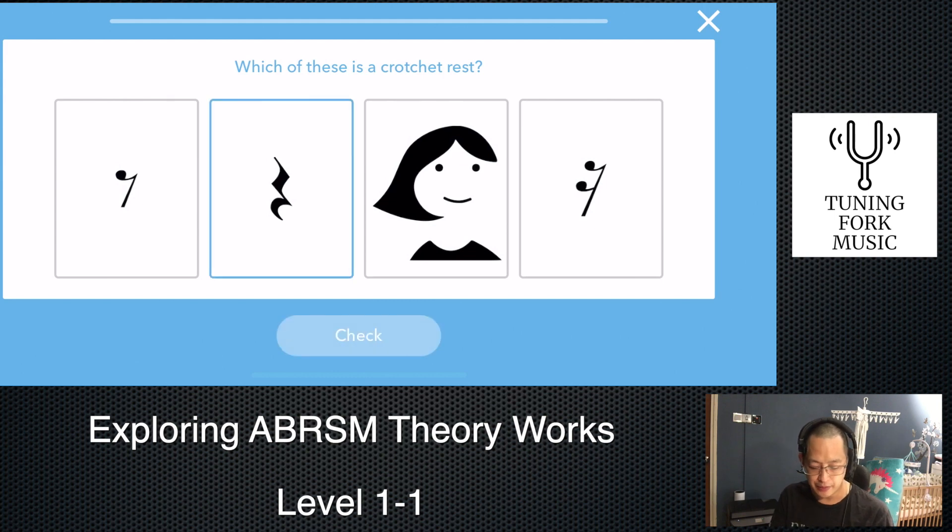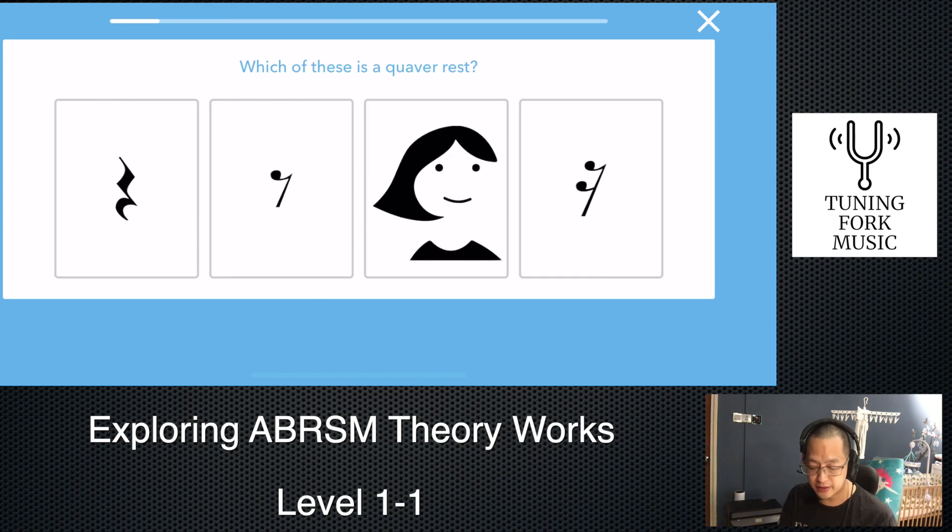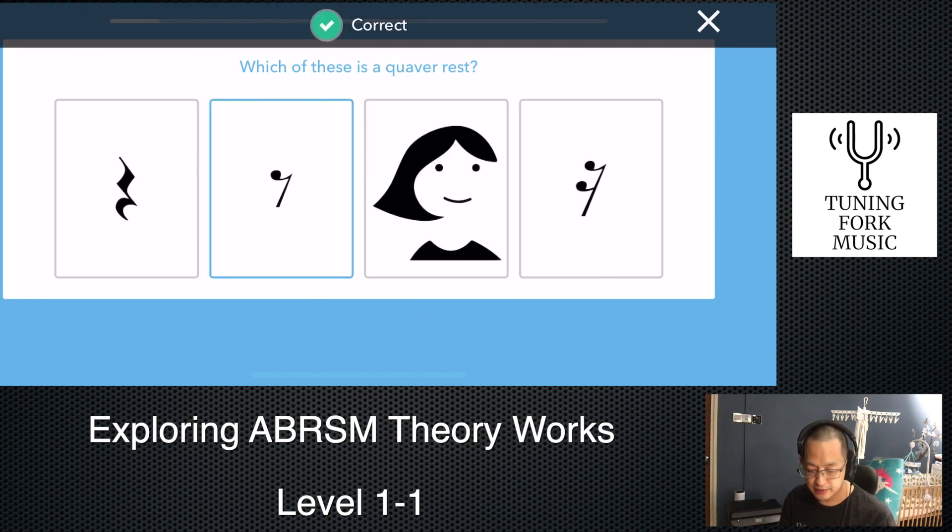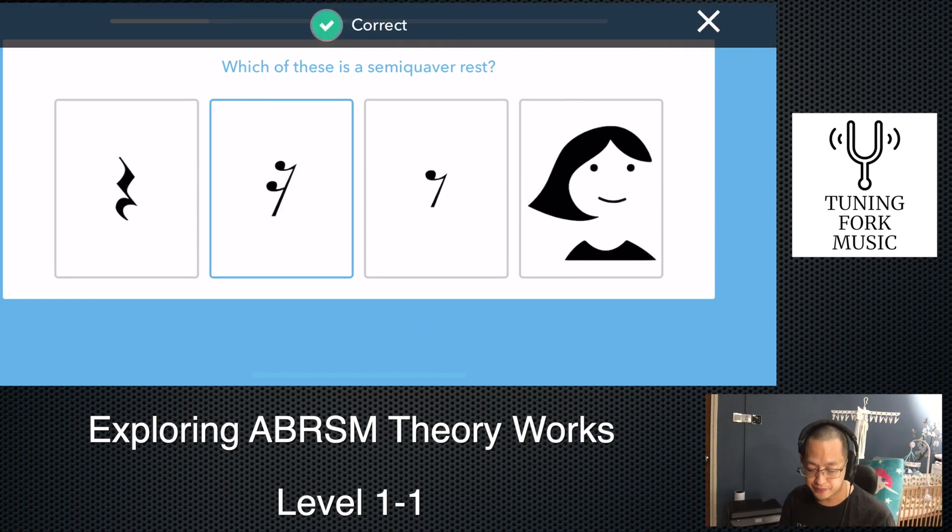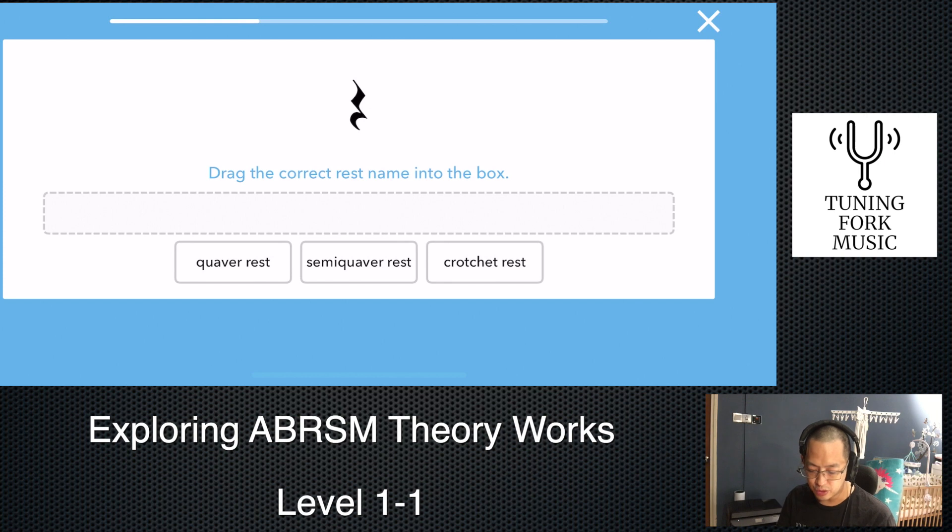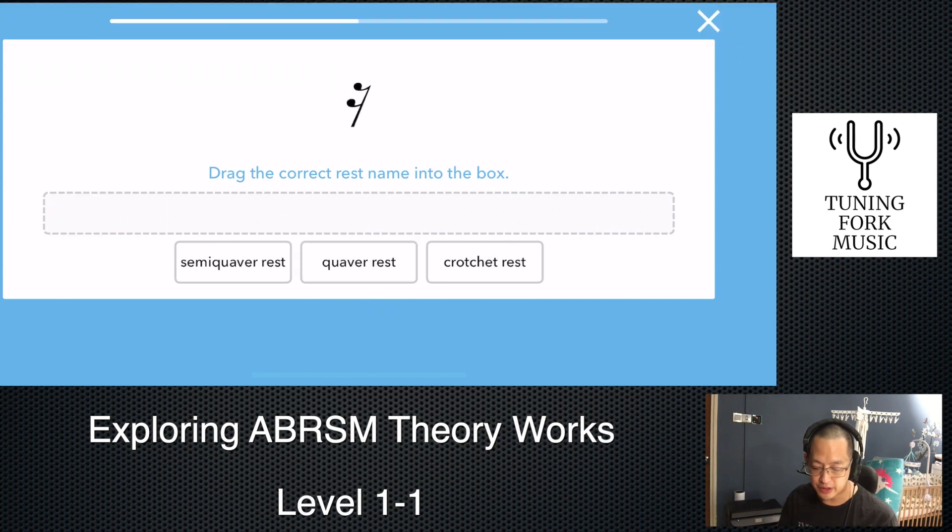It's asking for a crotchet rest, which is the funny-looking symbol on there. There we go. Correct. Quavers, one flag. Semi-quaver rest, two flags. Now, drag the correct rest name. We see it's just a plain squiggle, no flags, no anything. It's, therefore, a crotchet rest. And then, one flag. That would make it a quaver rest.